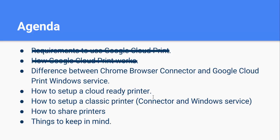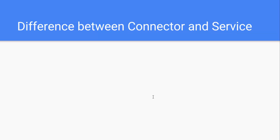Difference between the Chrome browser connector and the Google Cloud Print Windows service: with the Chrome browser connector, you use the Chrome browser to set up Cloud Print. Once it's set up, you need to keep the Chrome browser open and the user signed into it. If you close the browser, the printers will go offline.